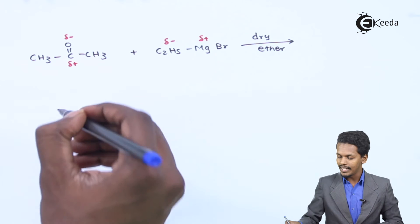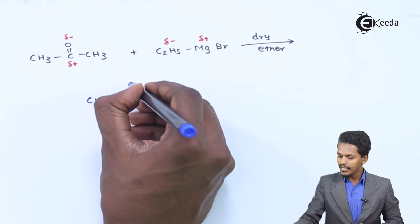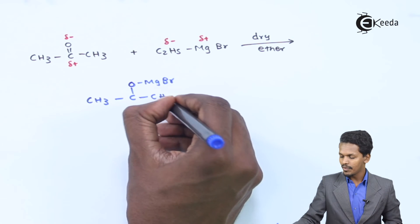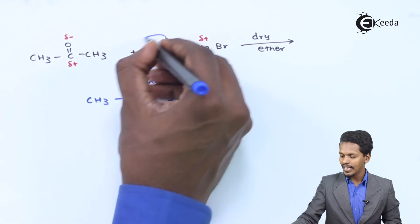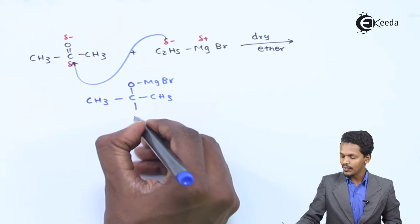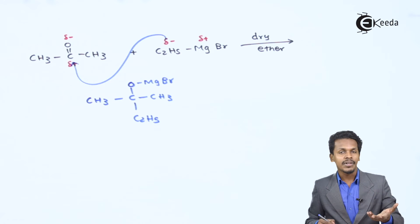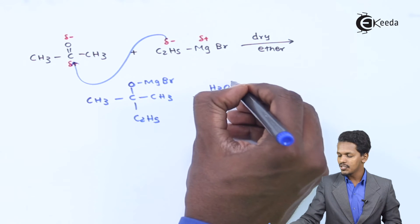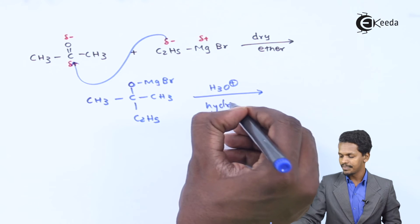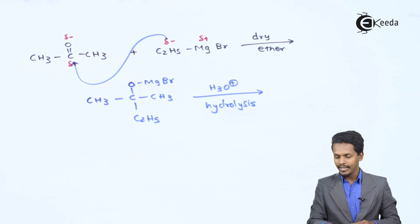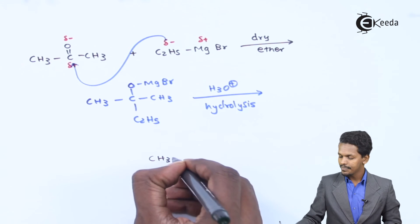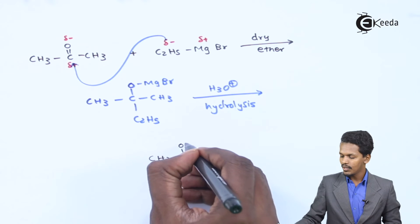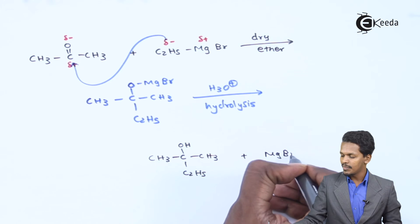The reaction proceeds in the presence of dry ether. The adduct we obtain is CH3-C(CH3)(C2H5)-OMgBr. The C2H5 group attaches to the carbonyl carbon. This is then treated under acidic conditions for hydrolysis, and the product we obtain is CH3-C(CH3)(C2H5)-OH, with the byproduct being MgBr·OH.